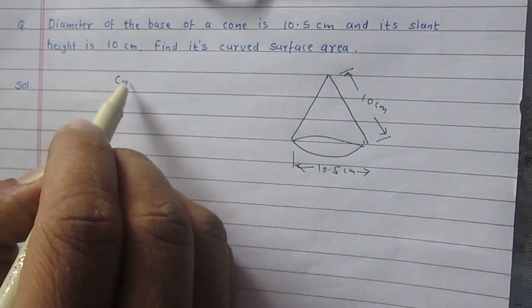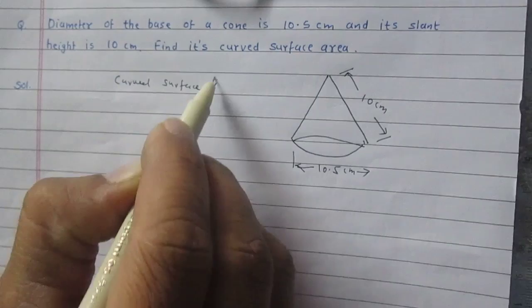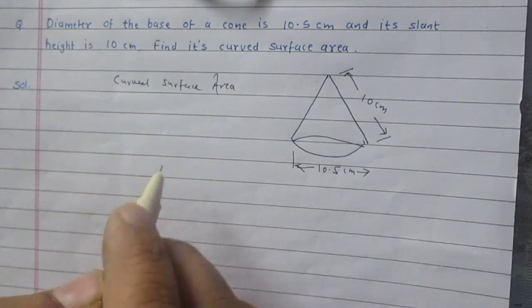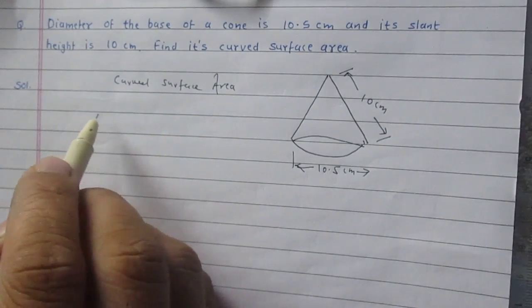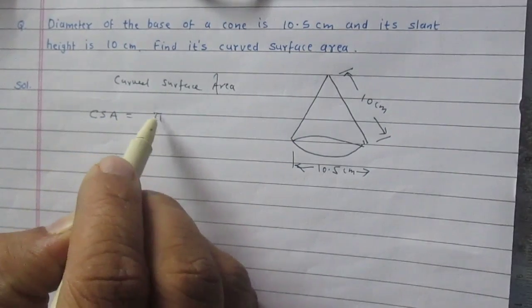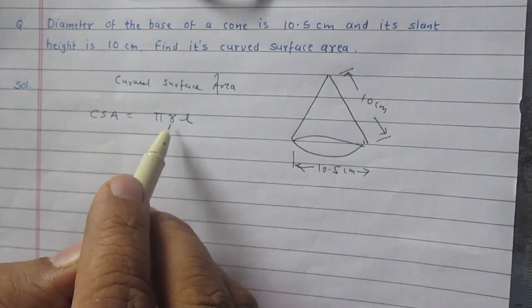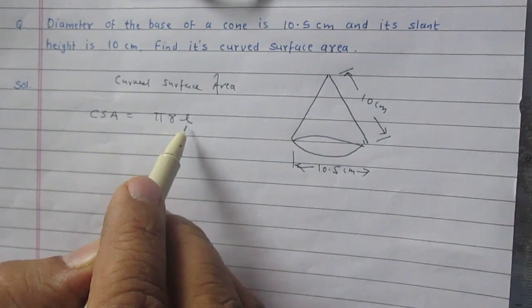And we are to find its curved surface area. We know that curved surface area of a cone is Pi R L, where R stands for the radius of the base of the cone and L stands for slant height of the cone.